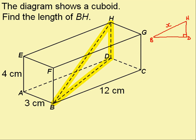To use Pythagoras, I need to know the lengths of the other two sides. DH is 4cm, so I know that one. If I knew this one, I'd be able to do it, but at the moment I don't know the length of BD.